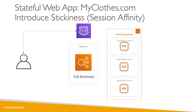We can introduce stickiness or session affinity — that's an ELB feature. We enable ELB stickiness and now the user's first request goes to the first instance, and every subsequent request also goes to that same instance. This works really well, but if an EC2 instance gets terminated for some reason, we still lose the shopping cart. There is definitely some improvement here thanks to stickiness and session affinity.